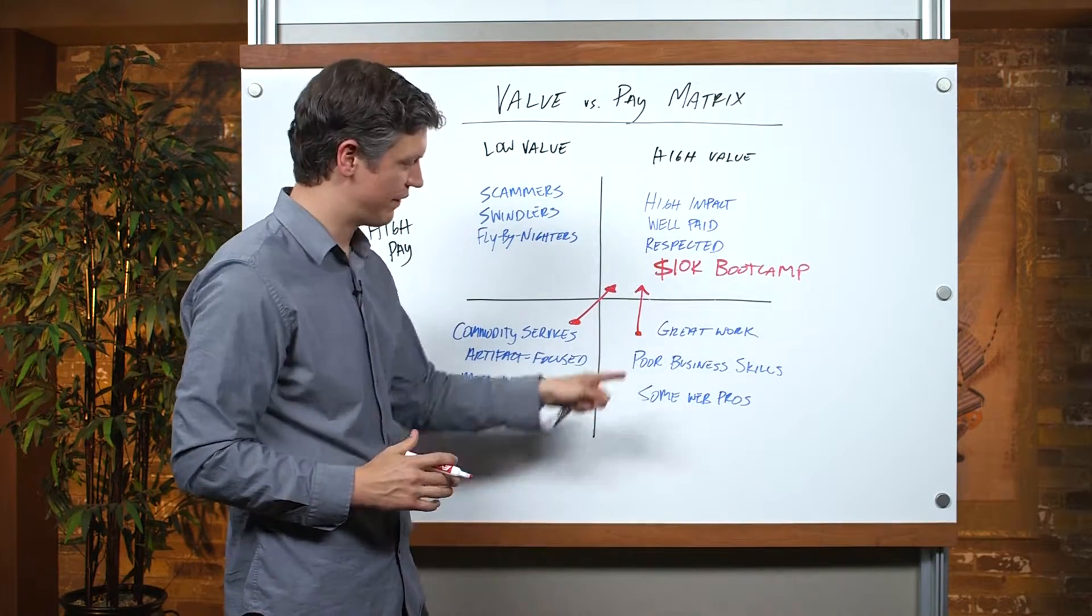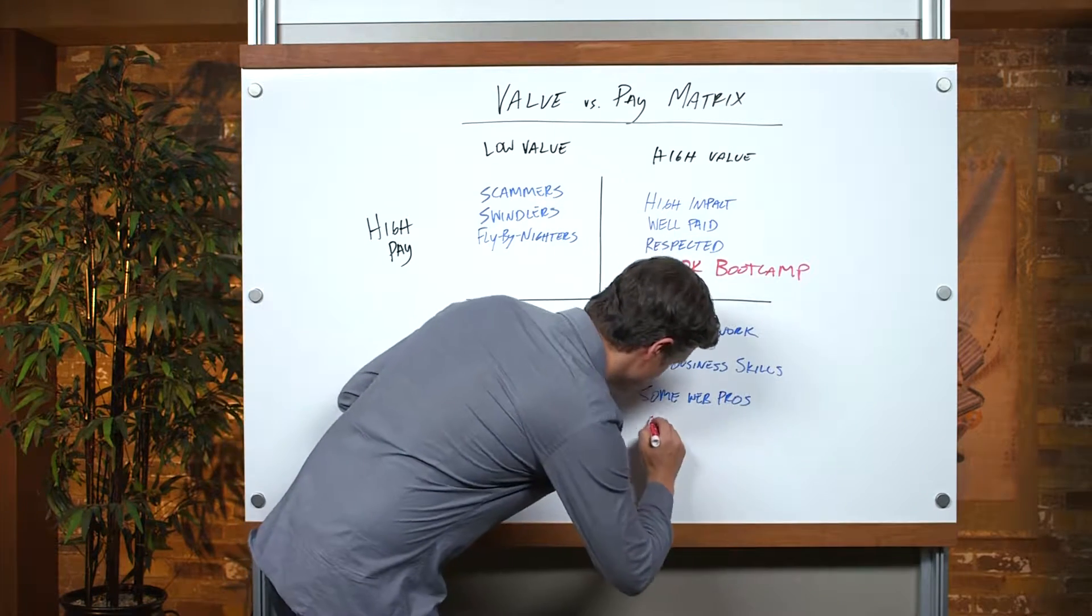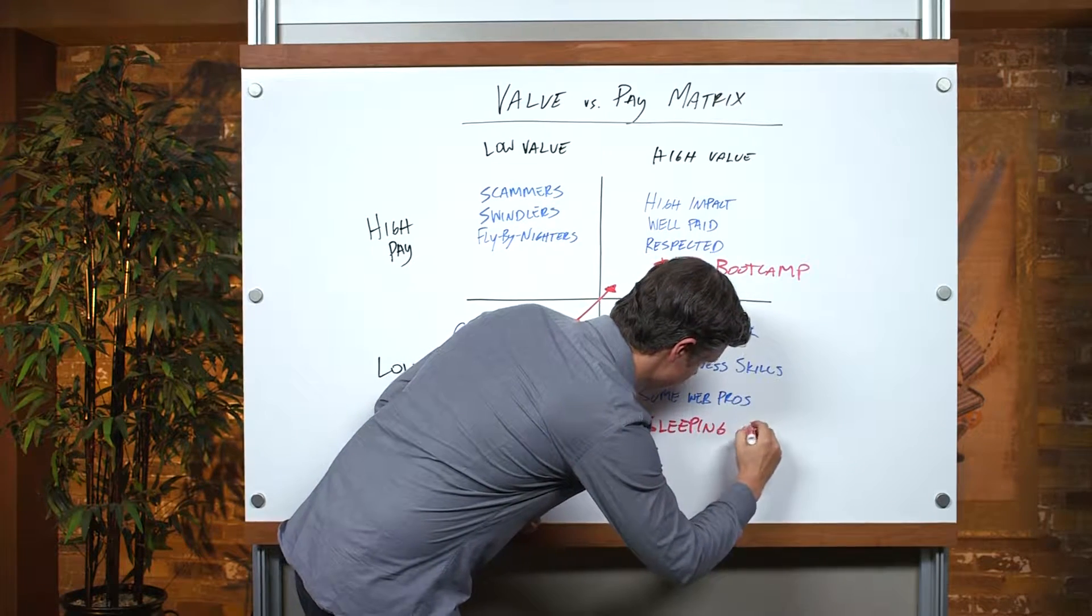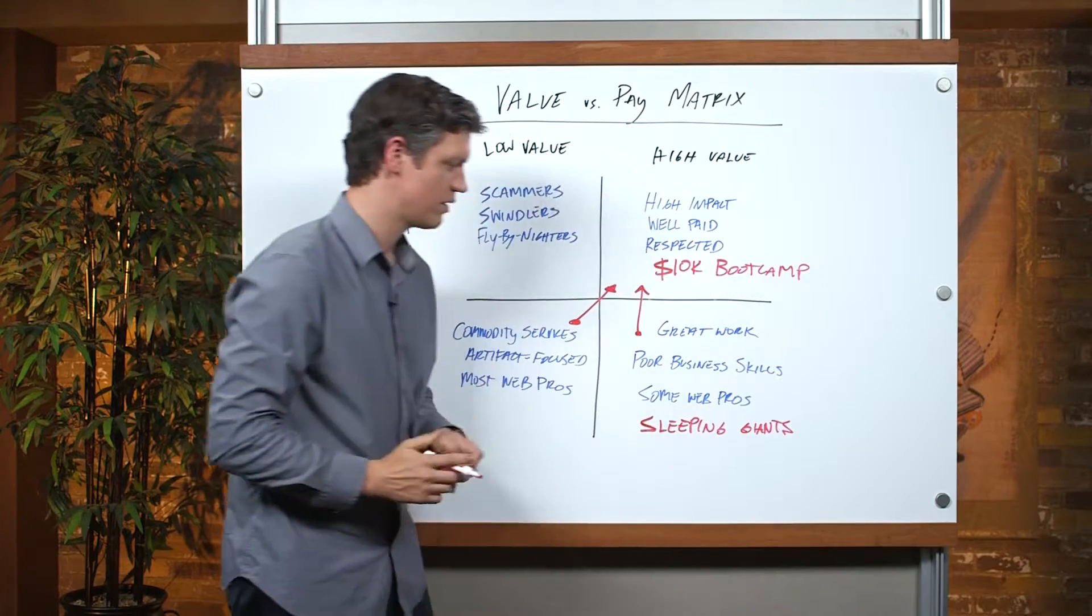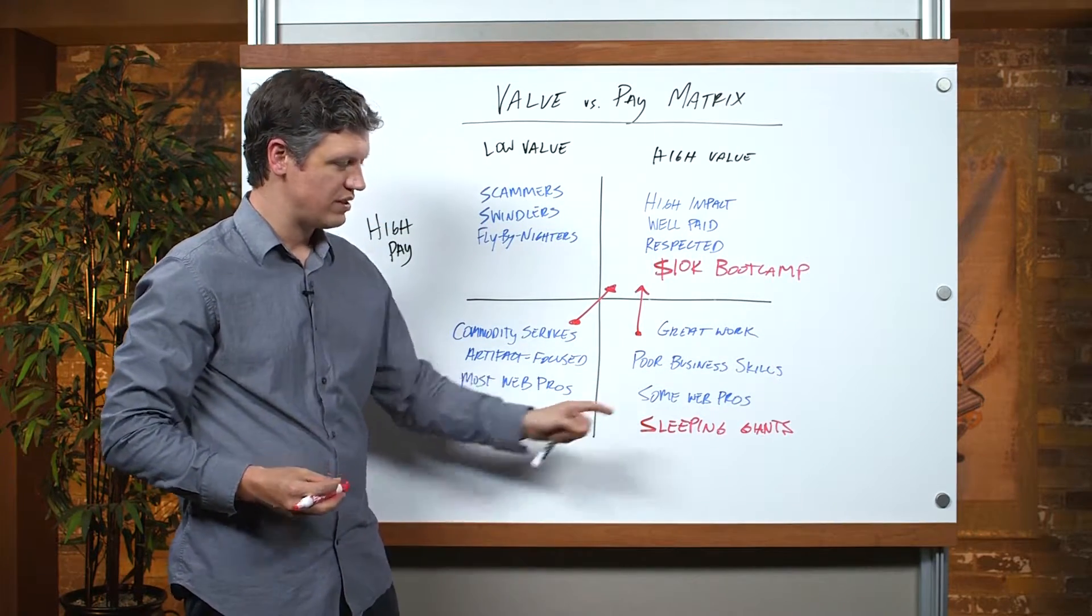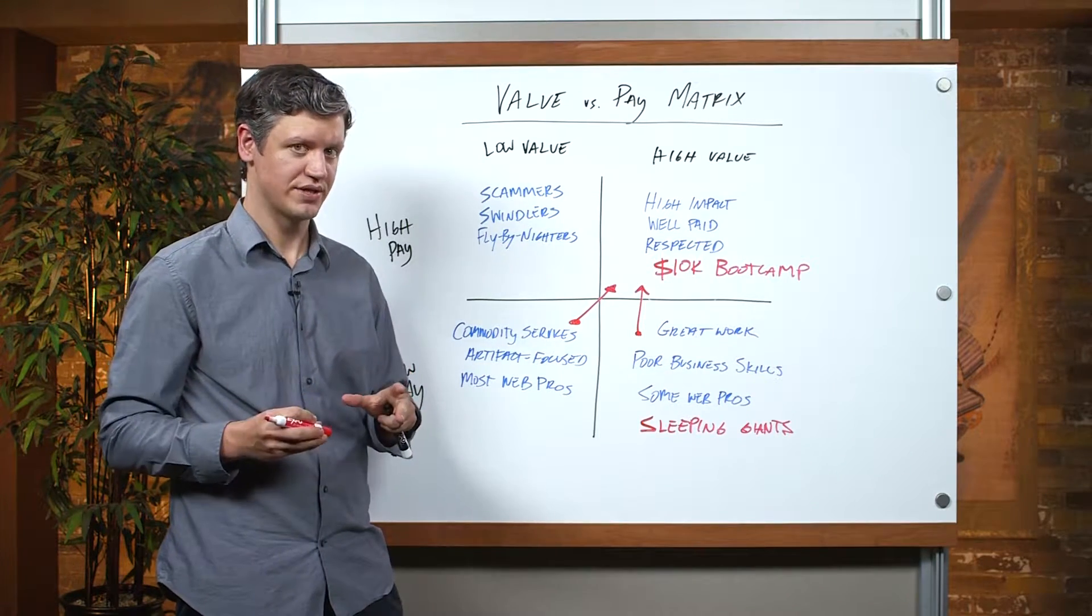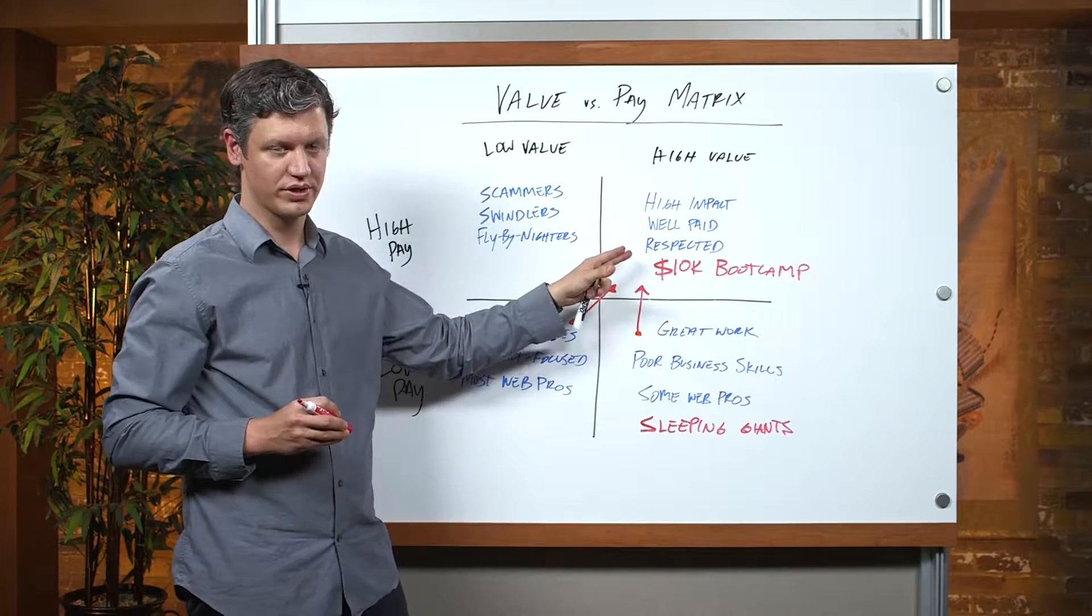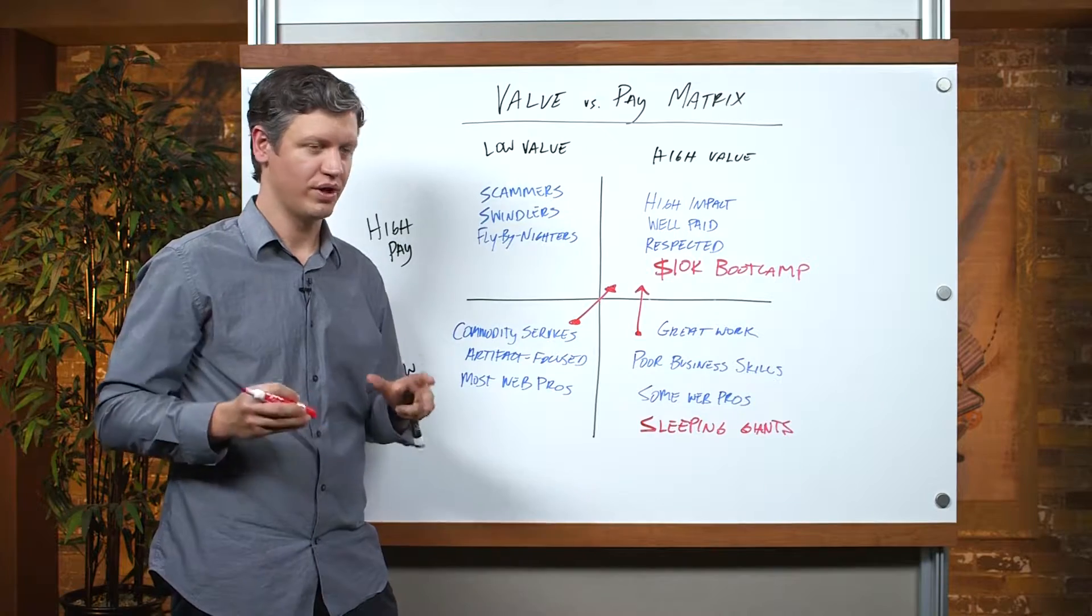Now the one thing I would say about this quadrant here, and we've seen this time and time again, we call this quadrant our sleeping giants. The reason I say that is because these are the people that by just making a few small changes to their business and to their processes, they accelerate so fast into this quadrant that sometimes they completely amaze everybody that's running bootcamp.